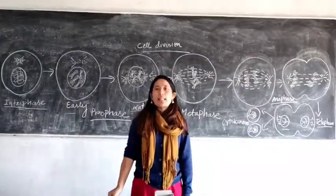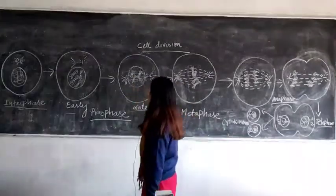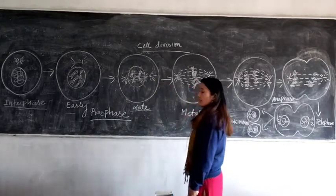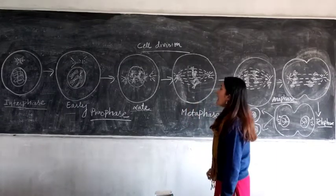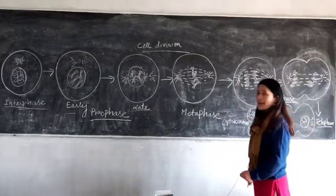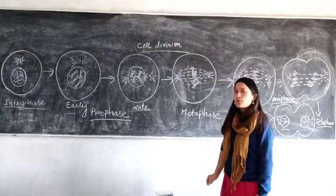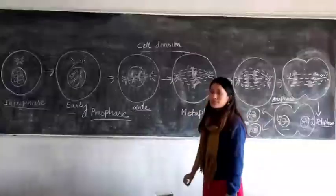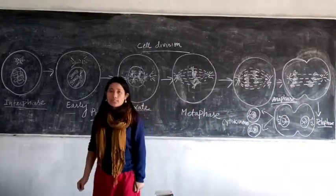This diagram is for the animal cell. In the case of plant cells, the only difference is they do not have a centrosome, but spindle formation takes place with the help of other microtubular structures. Also, furrow formation does not take place in plant cells — instead, cell plate formation takes place and the cell is separated. Plant cells also have an additional outer layer, the cell wall, which is how you can distinguish between a plant cell and an animal cell.